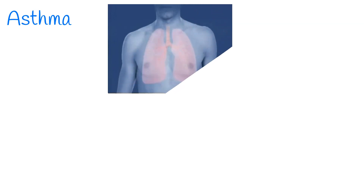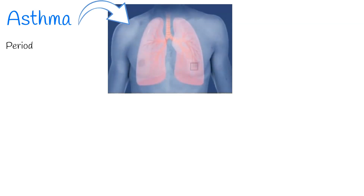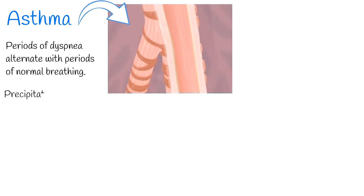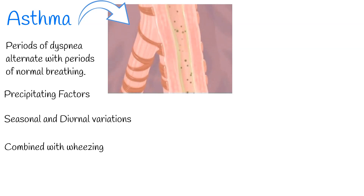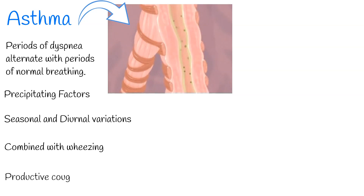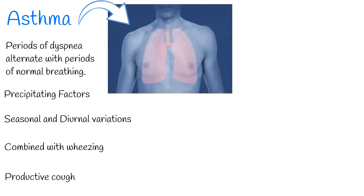Second, asthma. In asthma, periods of dyspnea frequently alternate with periods of normal breathing. There may be a family history of asthma, and precipitating factors or events may be noted by the patient. Seasonal and diurnal variations in symptoms are common. Difficulty breathing is commonly combined with wheezing, and a productive cough is frequent, particularly during recovery from an acute attack.